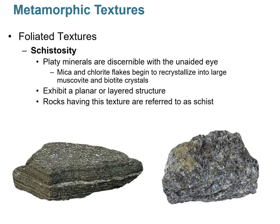Schistosity occurs when platy minerals become discernible with the unaided eye — this is when metamorphic rocks become shiny, sparkly, and glittery. The chlorite minerals are no longer stable and give way to biotite and mica, which grow larger and have reflective surfaces. There's recrystallization into larger minerals, but this still exhibits a layered structure, so it's still foliation — we specifically call this schistosity, and rocks with this texture are called schist.